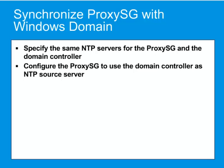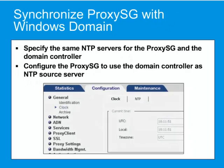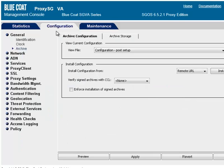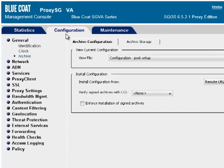The ProxySG NTP configuration options are located in the Configuration, General, Clock section, under the Clock and NTP tabs. After you have synchronized the ProxySG's internal clock with the domain controller, you can join the appliance to the Windows domain.